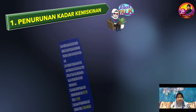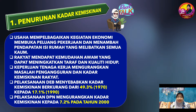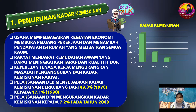Penurunan kadar kemiskinan. Usaha kerajaan yang mempelbagaikan kegiatan ekonomi telah membuka peluang pekerjaan dan menambah pendapatan isi rumah yang melibatkan semua kaum. Rakyat mendapat kemudahan asas yang dapat meningkatkan taraf dan kualiti hidup. Keperluan tenaga kerja juga telah mengurangkan masalah pengangguran dan kadar kemiskinan rakyat. Melalui pelaksanaan Dasar Ekonomi Baru, kadar kemiskinan berkurang daripada 49.3% pada tahun 1970 kepada 17.1% pada tahun 1990. Pelaksanaan ini diteruskan lagi dengan pencapaian DPN yang mengurangkan kadar kemiskinan kepada 7.2% pada tahun 2000.